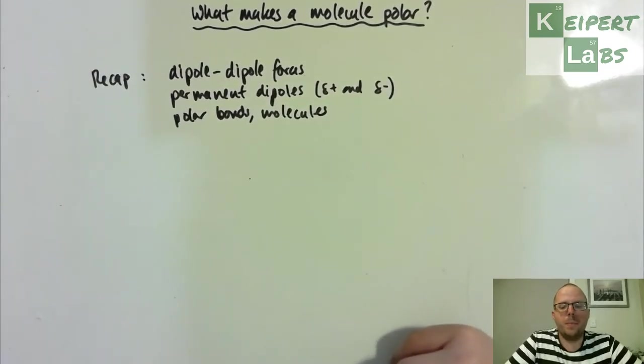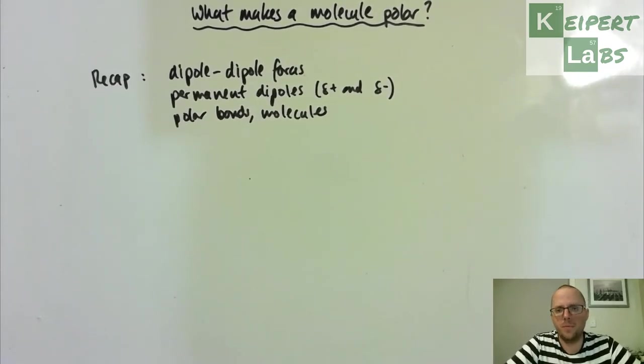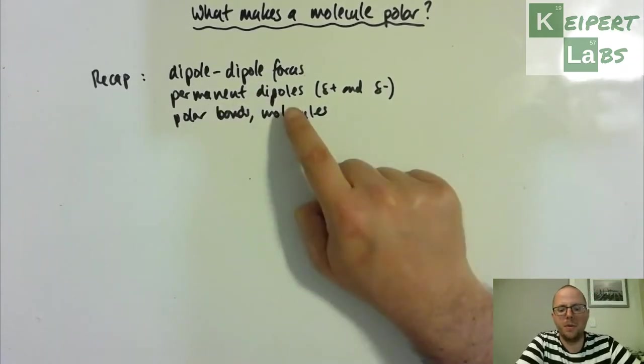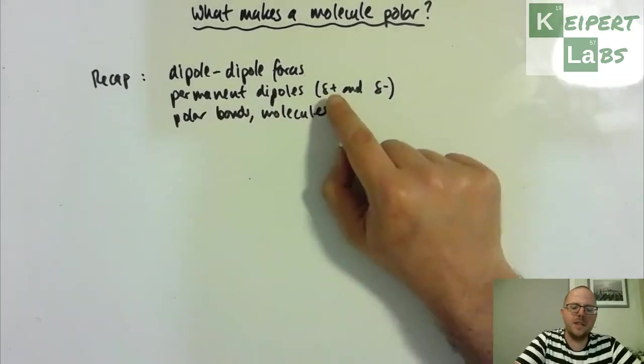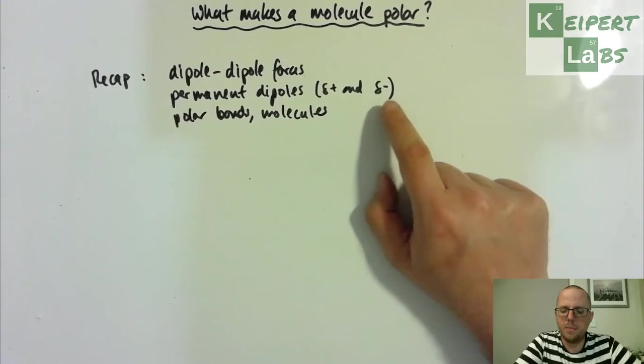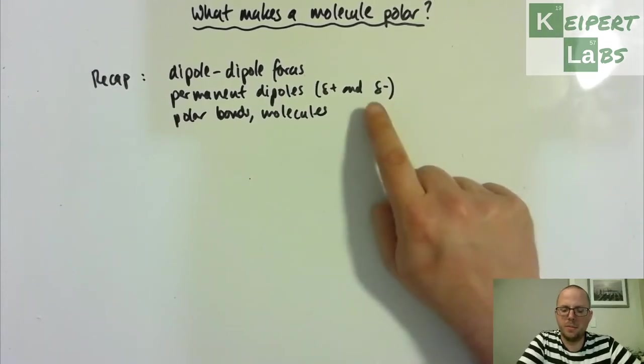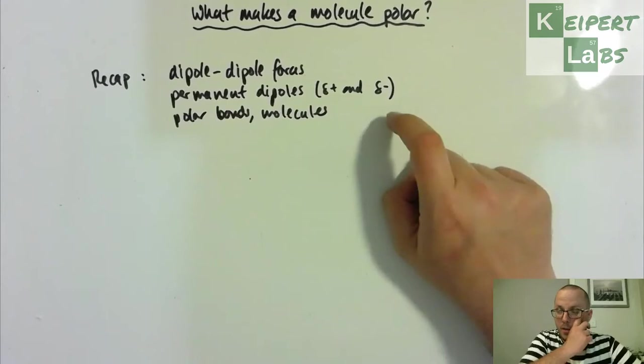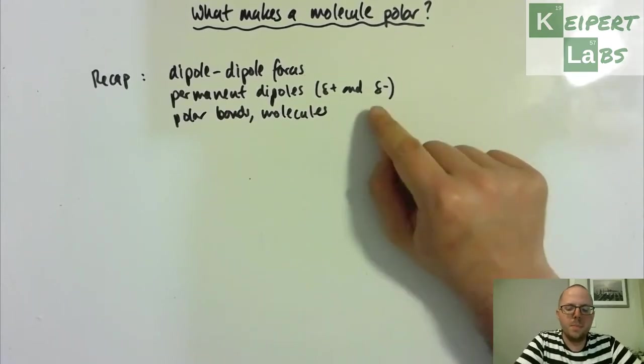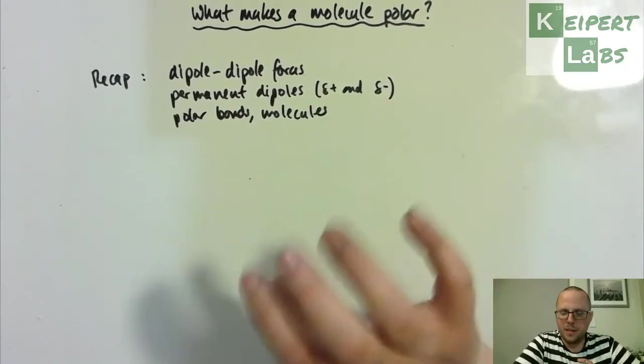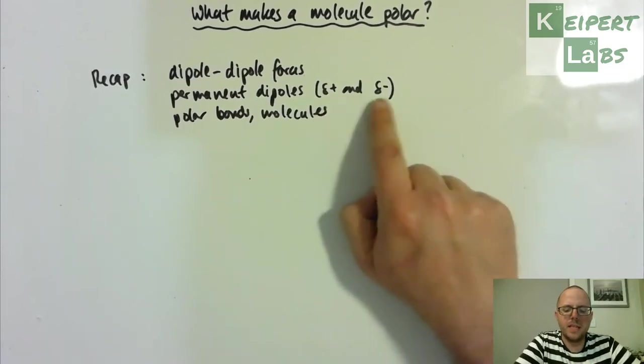So to recap, we introduced the idea of the intermolecular attraction called dipole-dipole forces. It's a different type of intermolecular attraction that exists between molecules that are permanent dipoles rather than temporary ones. They always have a positive and negative end, a really slight positive and negative, hence the little delta symbol that looks like an eight that I haven't quite completed. It's only a really subtle difference, but it does exist.